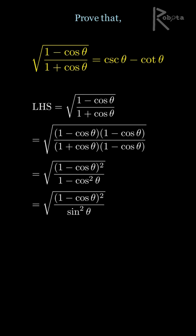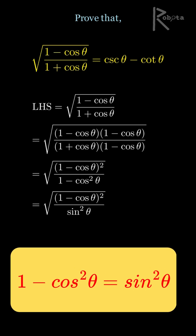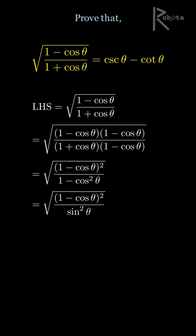Now simplify the expression under the square root. The numerator remains 1 minus cosine theta squared. The denominator, 1 minus cosine squared theta, is a standard trigonometric identity. It is equal to sine squared theta. So now we have the square root of 1 minus cosine theta squared divided by sine squared theta.